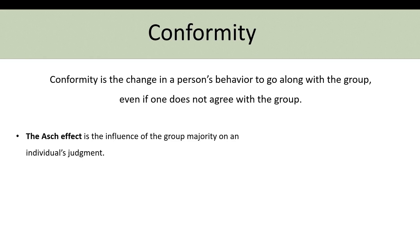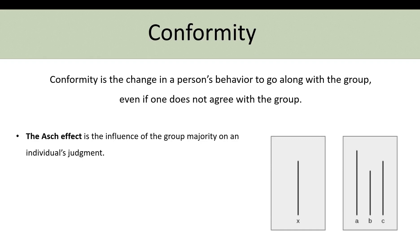The Asch Effect is the influence of the group majority on an individual's judgment. For example, in a classic study of a line test, a group of people who were in on the study and one person who was the participant tried to match the X line to one of several lines. The people who were in on the study said that the X line mostly matched the B line, which was obviously much shorter.